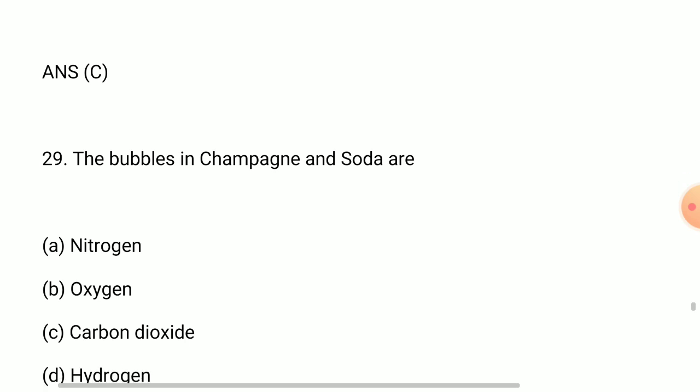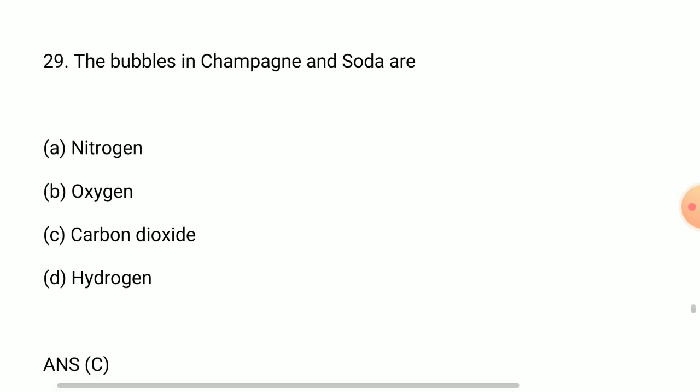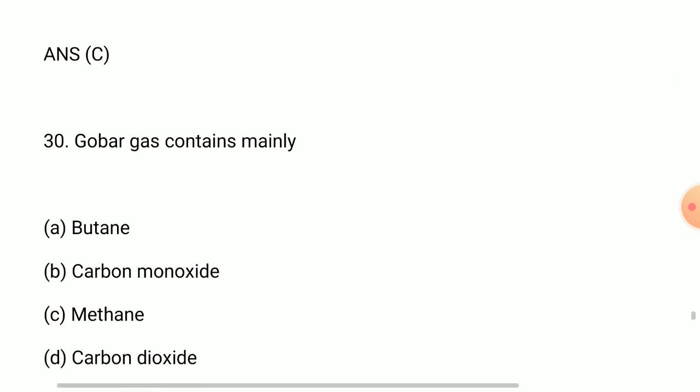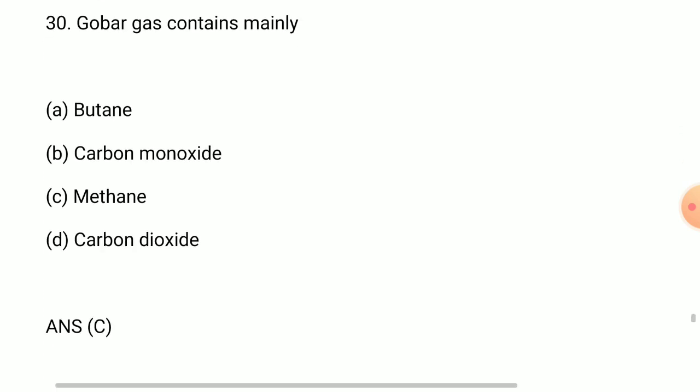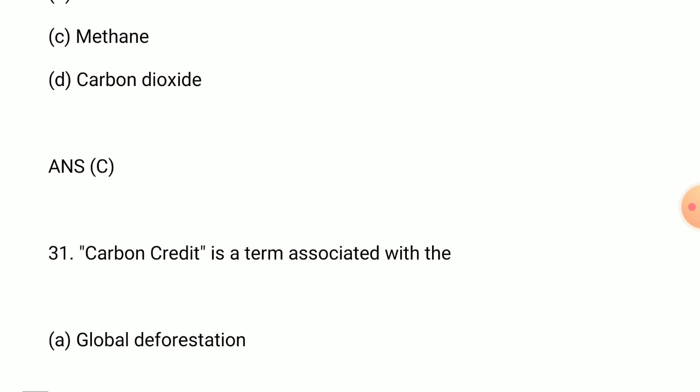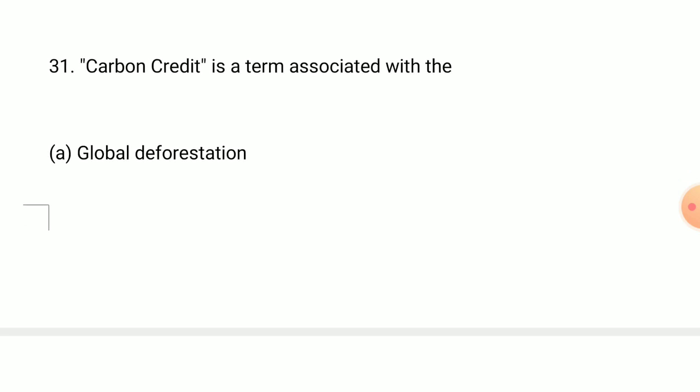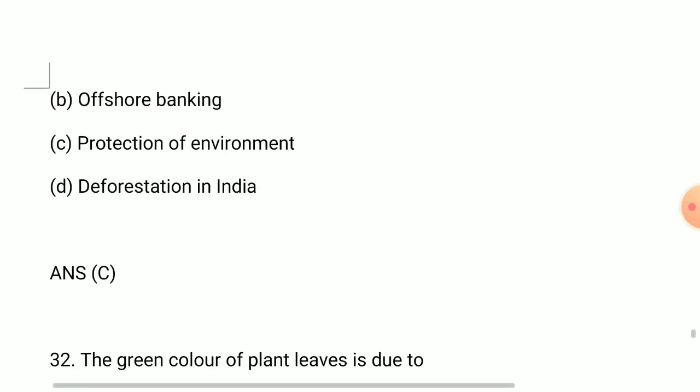Question number 29: the bubbles in champagne and soda are carbon dioxide. Question 30: gobar gas contains mainly answer is methane. Question 31: carbon credit is a term associated with answer is protection of environment.